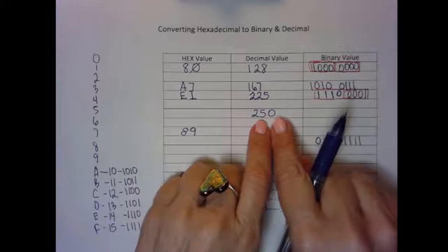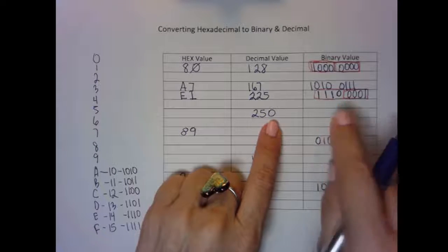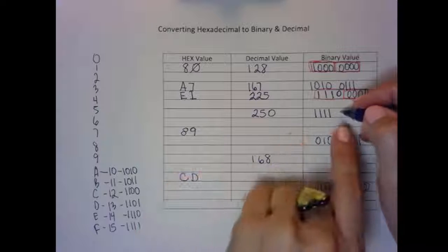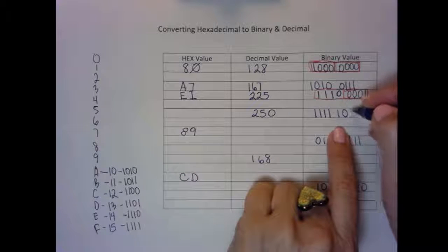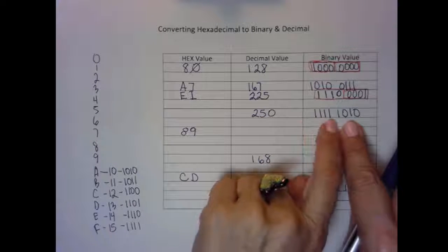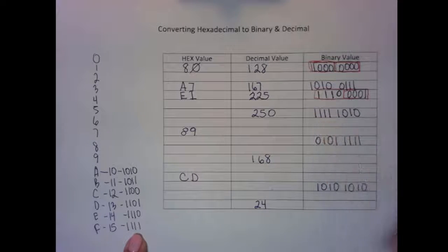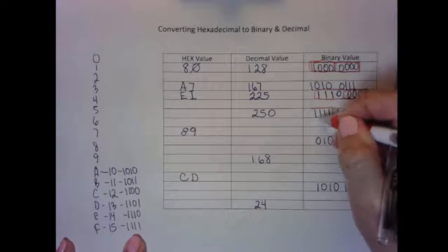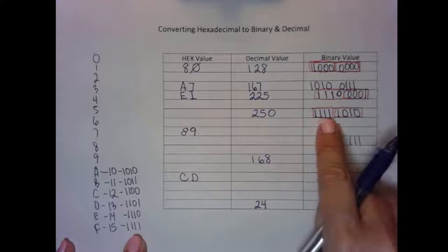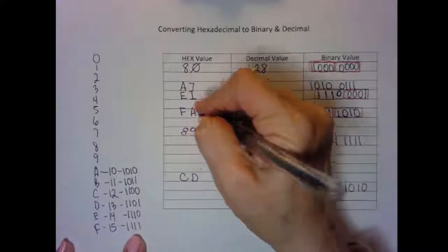Let's figure out 250. I need to first figure out the binary value of 250. That's 11110000 for 240, then adding 10 gives us 11111010. If I have all of the ones on in the first hex tet, the hex value is F. The second hex tet, 1010, is A. So the hex value for 250 is FA.